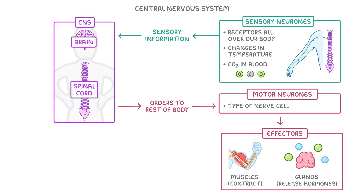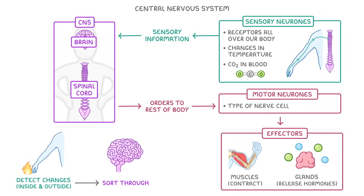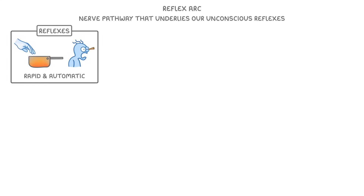All of these parts work together to make a nervous system that can detect changes both inside and outside of our bodies, sort through all of that information, and then respond to it. A special case of all of this in action is a reflex arc, which is a technical term for the nerve pathway that underlies our unconscious reflexes, such as when you instantly move your hand away from a hot pan, or blink when something touches your eye. The benefit of having these reflexes is that they're rapid and automatic, so we can respond to things really quickly, which helps us to avoid getting hurt.